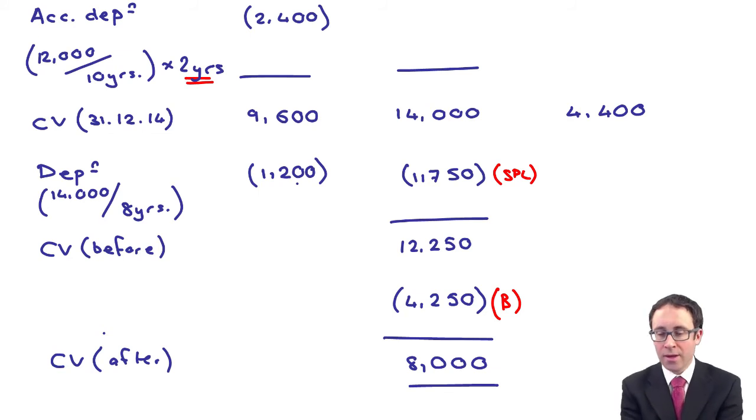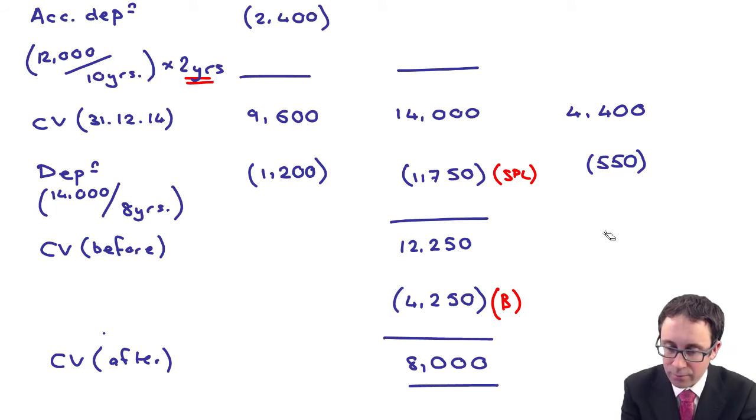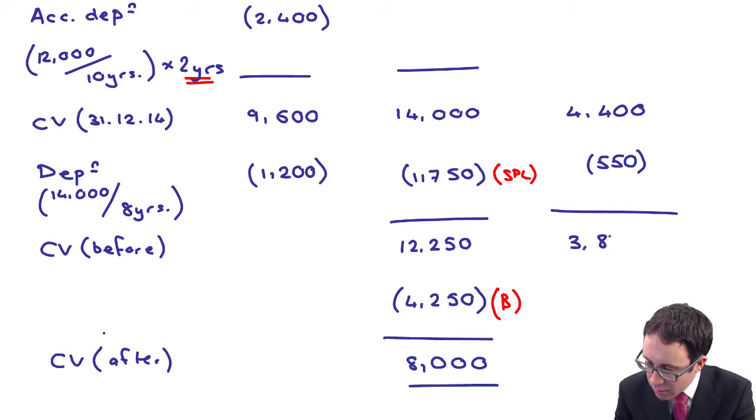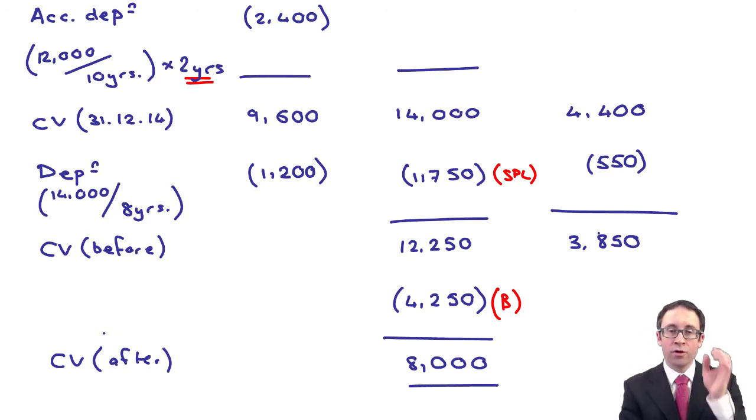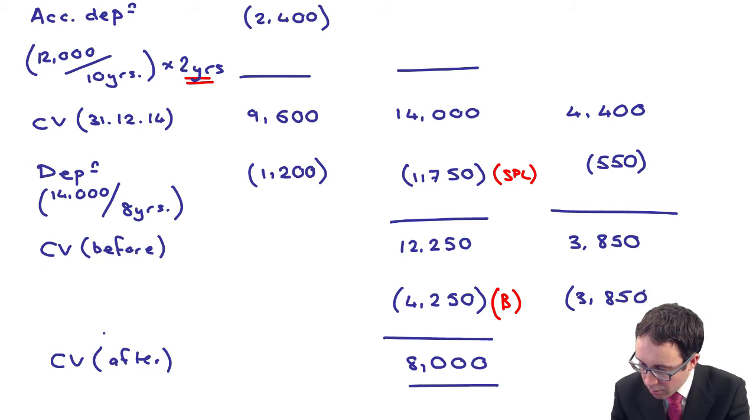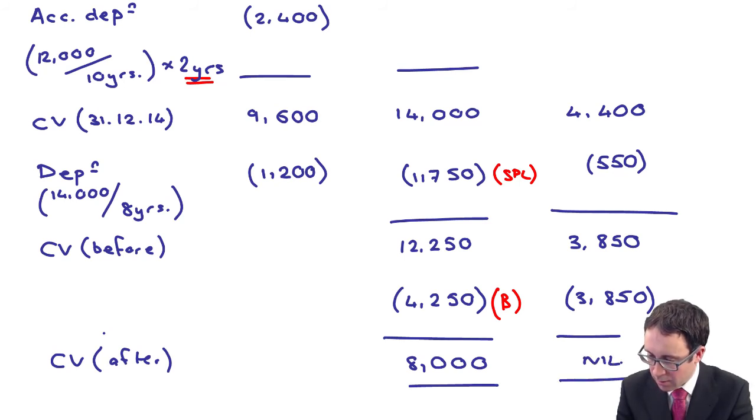We revalued it upwards at December 2014. We haven't adjusted the reserve for any excess depreciation. We should, in the year, have charged 1,200, being the 12,000 divided by 10 years. The excess depreciation is therefore 550. That means that at the date of the revaluation downwards, the reserve would have been 3,850. Of that 3,850, all of it is going to be used.